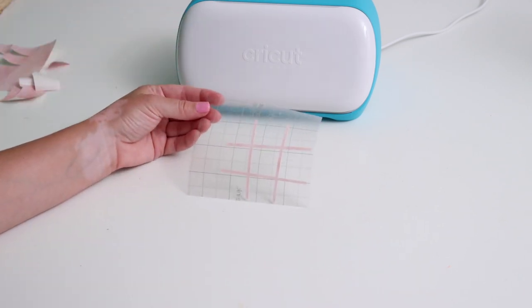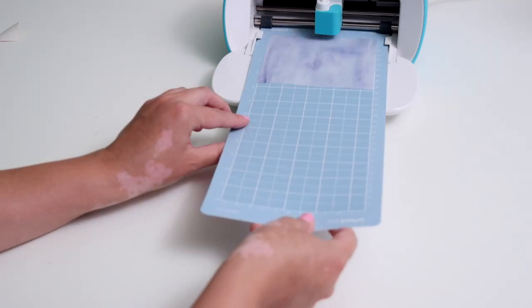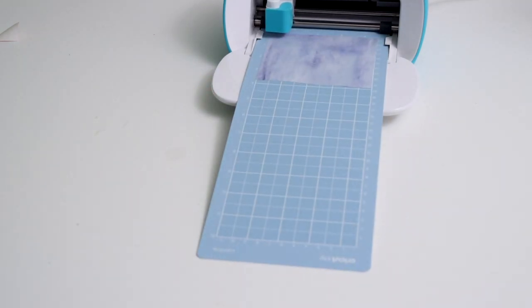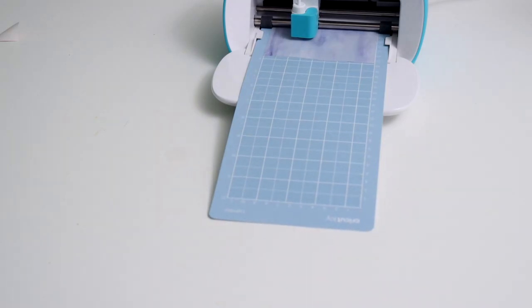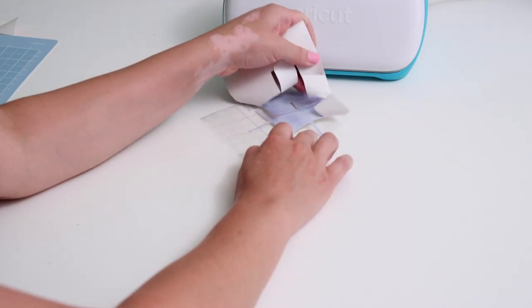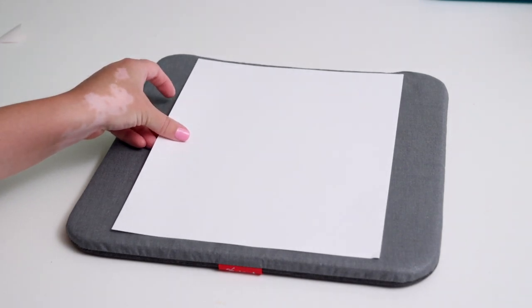But I eventually got it, and then I'm going to go ahead and do the same exact thing with this blue Infusible Ink transfer sheet. So I'm going to make four coasters - two pink and two blue. So I repeated this two times for each color. So this is the fun part.